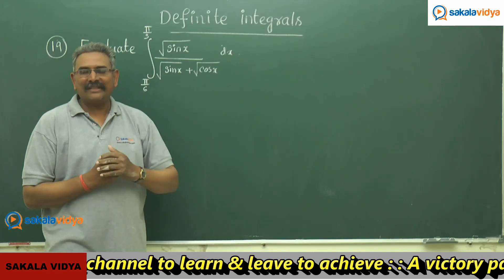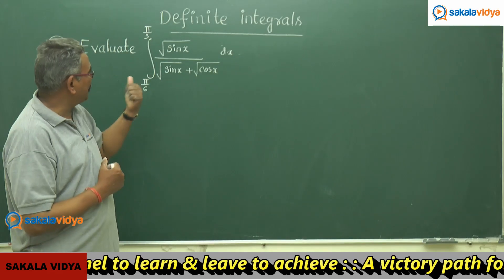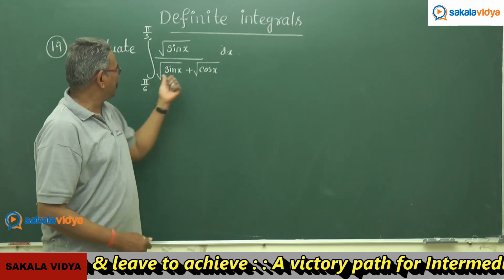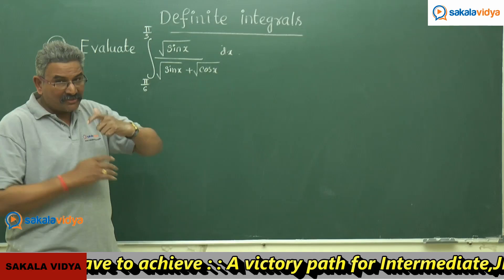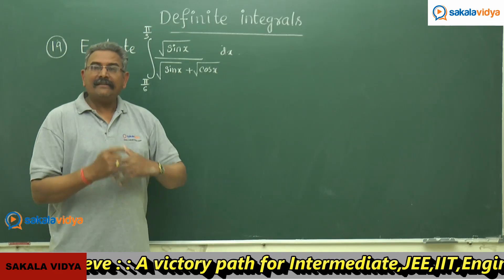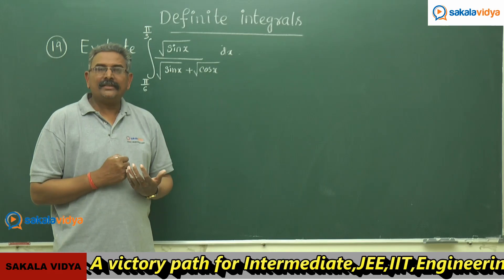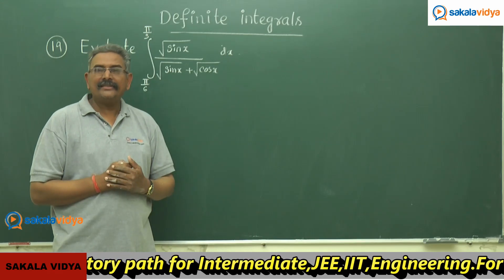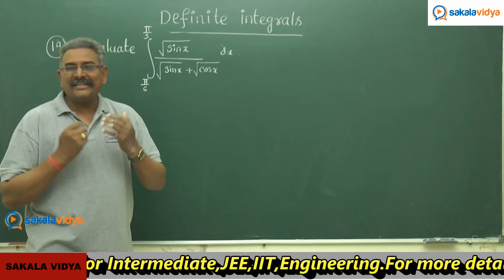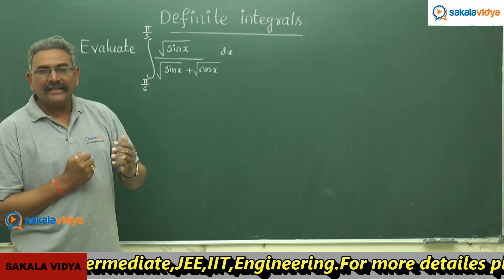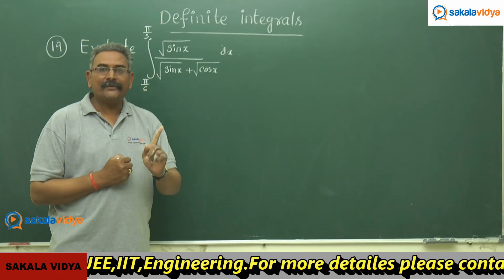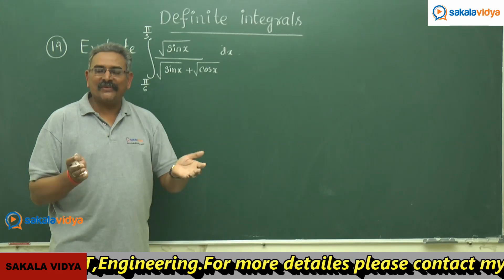The property to recall is: whenever integral from a to b of f(x) dx is given, we can write it as integral from a to b of f(a+b−x) dx. Using that property, the answer is not π/4 — the answer may be π/12.